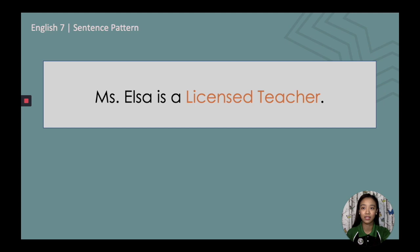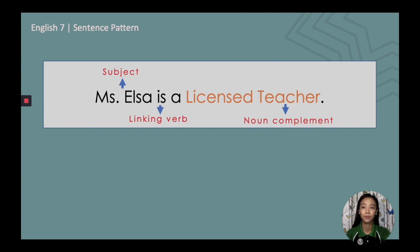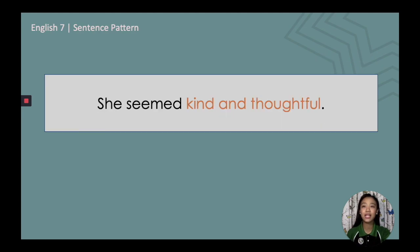Let's have a look at these sentences. 'Ms. Elsa is a licensed teacher.' In this sentence, the subject is the noun Ms. Elsa. The linking verb is the be verb 'is,' and the complement is the noun 'a licensed teacher.' In the sentence 'She seemed kind and thoughtful,' the subject is the pronoun 'she,' the linking verb is the sensory verb 'seemed,' and the complement are the adjectives 'kind' and 'thoughtful.'